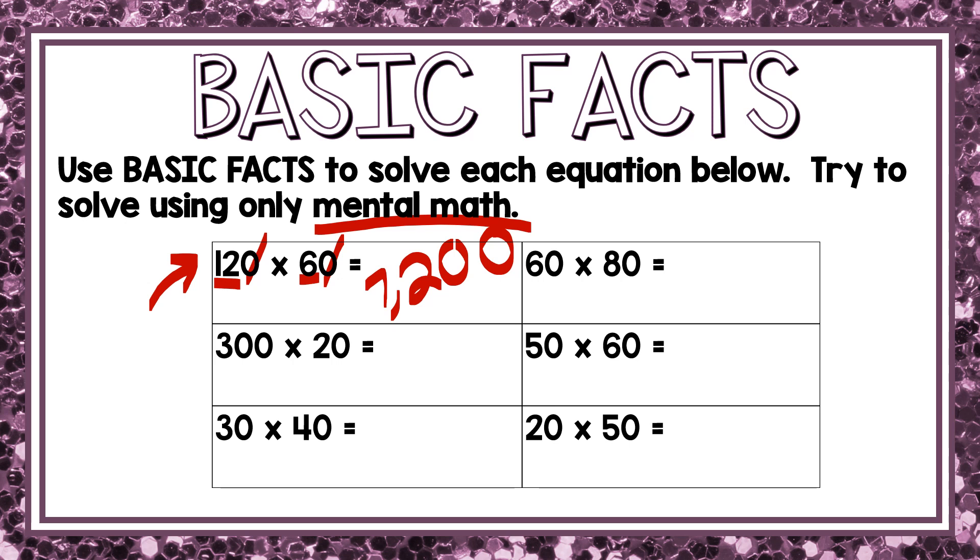Let's look at this example, 60 times 80. I see that 6 times 8 is 48. And I see that I have a zero at the end of 60 and a zero at the end of 80. So that means I'm going to have two zeros at the end of my answer. And my final answer is 4,800.